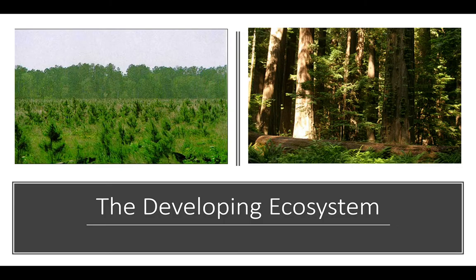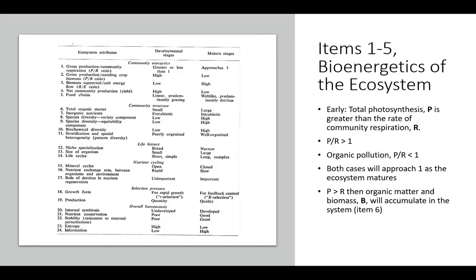In this paper he talks about a young ecosystem becoming a mature ecosystem, and he gives 24 attributes to each scenario showing how they fall in line with either being young or mature. There is a table in the paper that lists each attribute, and I'll explain each one of them.